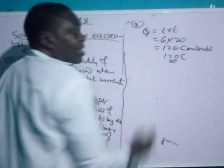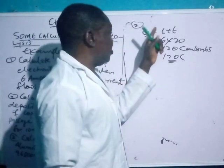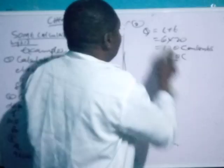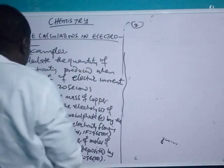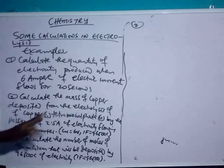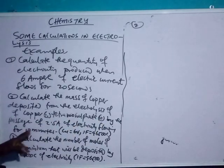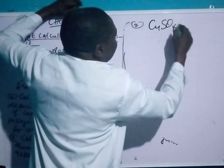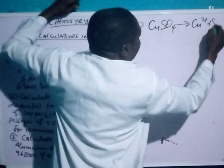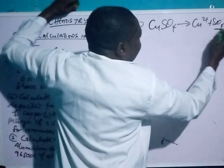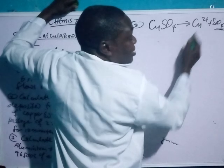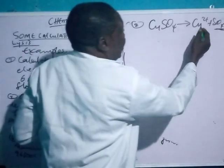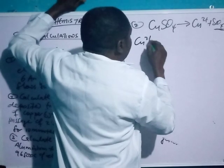Now let's look at the second calculation. Calculate the mass of copper deposited from the electrolysis of copper(II) tetraoxosulphate(VI) solution by the passage of 2.5 amperes of electricity flowing for 10 minutes. From the dissociation of CuSO₄: CuSO₄ → Cu²⁺ + SO₄²⁻. The SO₄²⁻ remains in solution while Cu²⁺ migrates to the cathode, which contains excess electrons.